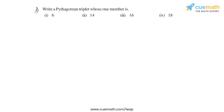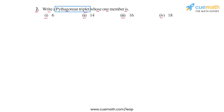Question 2 of this exercise says: write a Pythagorean triplet whose one member is 6, 14, 16, and 18. Let's first discuss what the term 'Pythagorean triplet' means.